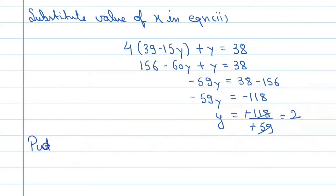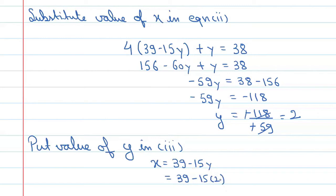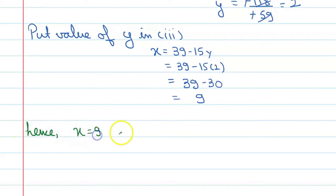Now we put the value of y into equation number 3: x equals 39 minus 15y, and y is 2, so it's 39 minus 15 into 2. You will get 39 minus 30, which gives you 9. So I can write the final answer: x is equal to 9 and y is equal to 2.